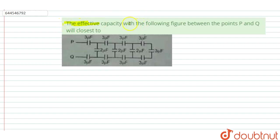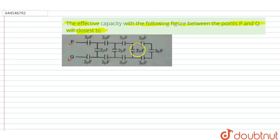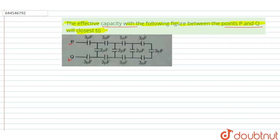In this question, given the effective capacitance from the following figure between points P and Q. This is point P and this is point Q. Three micro farad capacitors are connected in series or parallel, and two micro farad capacitors are also connected. We have to find the effective capacitance between points P and Q. Three micro farad, three micro farad, and three micro farad capacitors are connected in series.